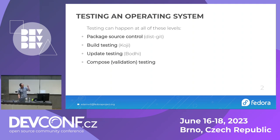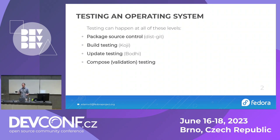There are four levels right now at which you can really do testing within Fedora. There's package source control - Fedora packages are stored in a Git repo and you can do testing on things that happen within that repo: pull requests, commits, anything you want. You can do testing at the level where builds happen - when you do a single package build within Koji, we can trigger tests on that. You can do testing at the level of the update. And we can do testing of composes, which are when we build the whole of Fedora together and actually produce the images - Docker containers, disk images, whatever we ship to users.